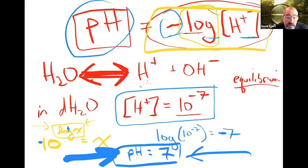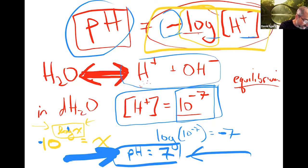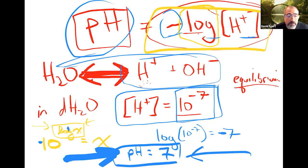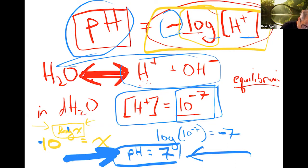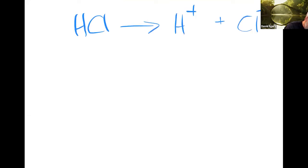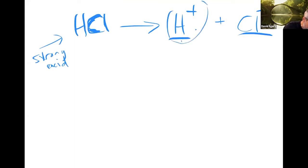pH of 7 just means the concentration of hydrogen ions is 10 to the minus seventh in pure water — due to spontaneous dissociation where sometimes they break apart, but most of the time water stays intact. So the concentration is very low. Now, the ups and downs get a little counterintuitive. Let's say I have HCl — hydrochloric acid — which is a strong acid because it dissociates completely.